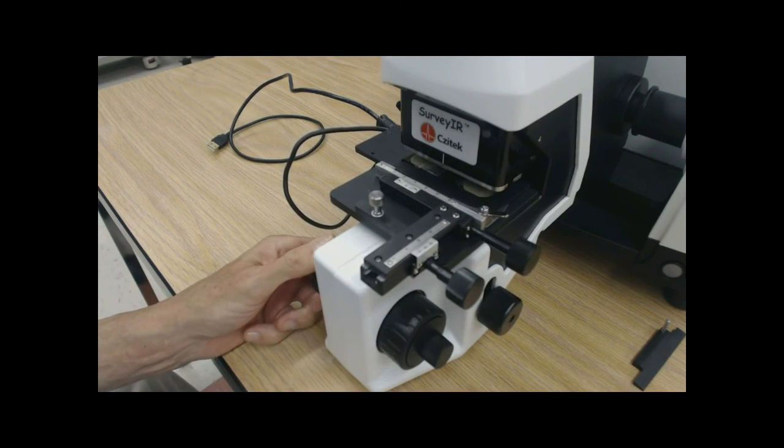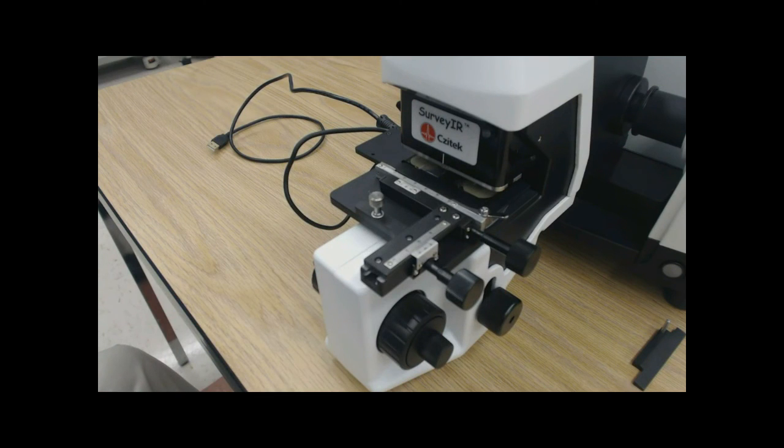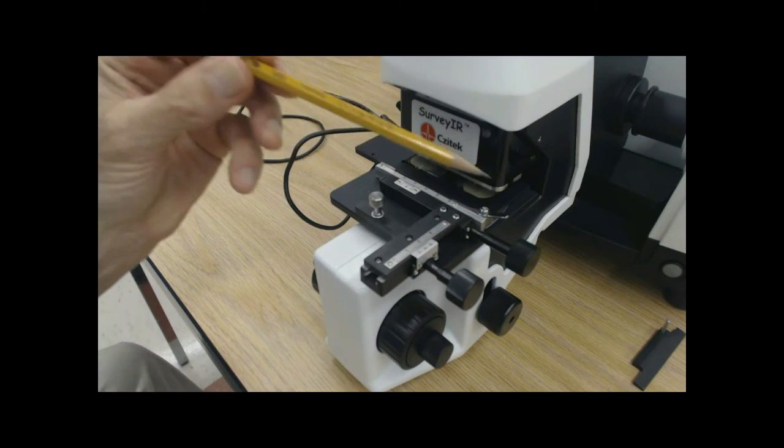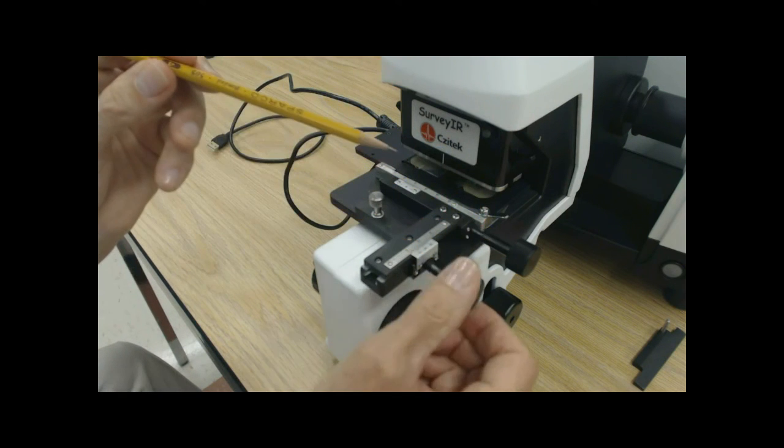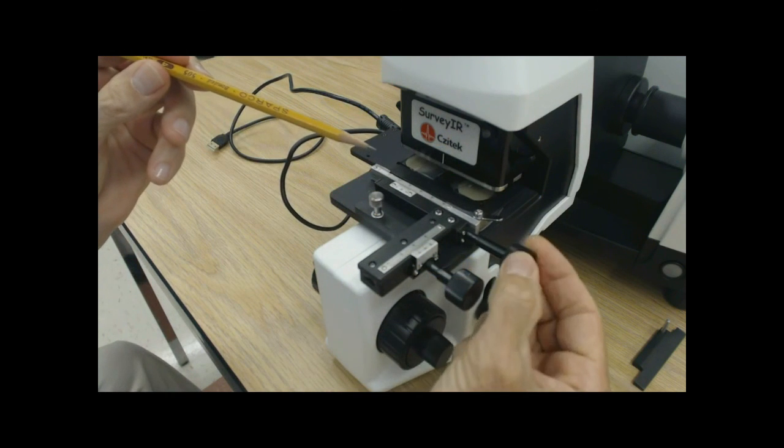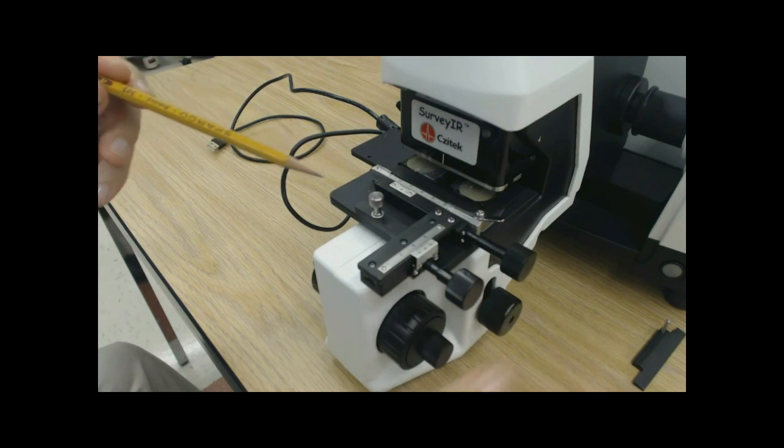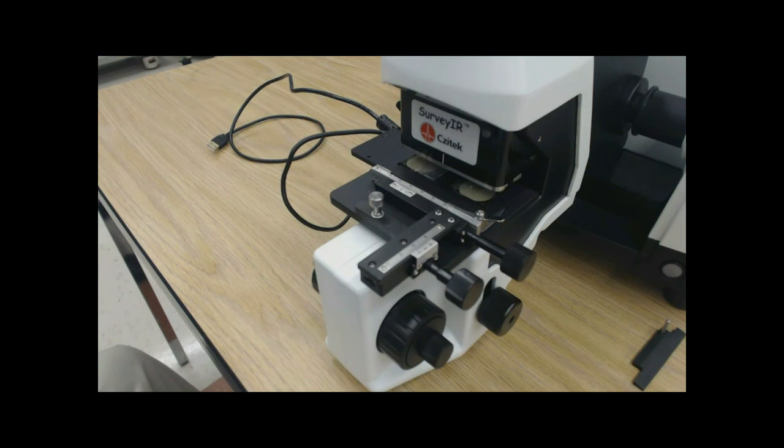We have coarse and fine focus controls located at the very front and easily accessible on surveyor. We demonstrated previously the sample XY motion in the 1 by 3 inch slide clip. Finally, for transmission samples supported on transmission windows or samples that are sandwiched in compression cells, we need to adjust the condenser focus.